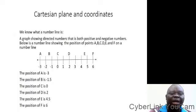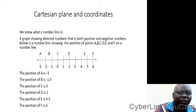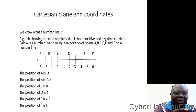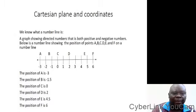Now look at the one we have on display. Look at the number line ranging from minus 3 up to plus 6. You see point C, where you have the zero mark. From there to the left, you have the negative numbers, and from that point to the right, you have the positive numbers. From what we have on display, look at the position of A. The position of A is minus 3.